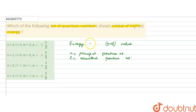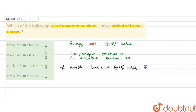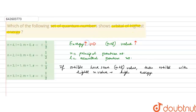Energy is determined by the n plus l value. If two orbitals have the same n plus l value, then the orbital with the higher n value has higher energy. So: higher n plus l means higher energy; and if n plus l is the same for two orbitals, then the higher n value gives higher energy. These are the two key points to keep in mind.